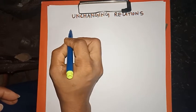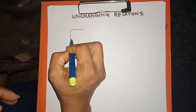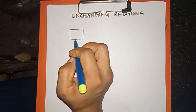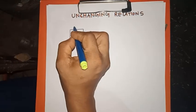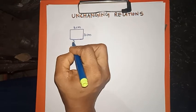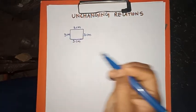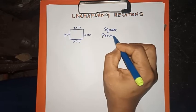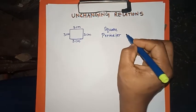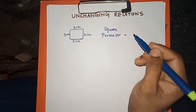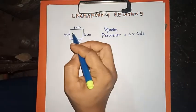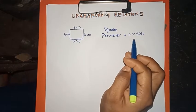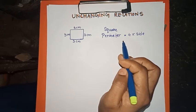First, we will take a square. In a square, we will take a look at each side. The perimeter is equal to 4. We have 4 sides, like 4 to a side. Try writing 4 times s, or 4s.